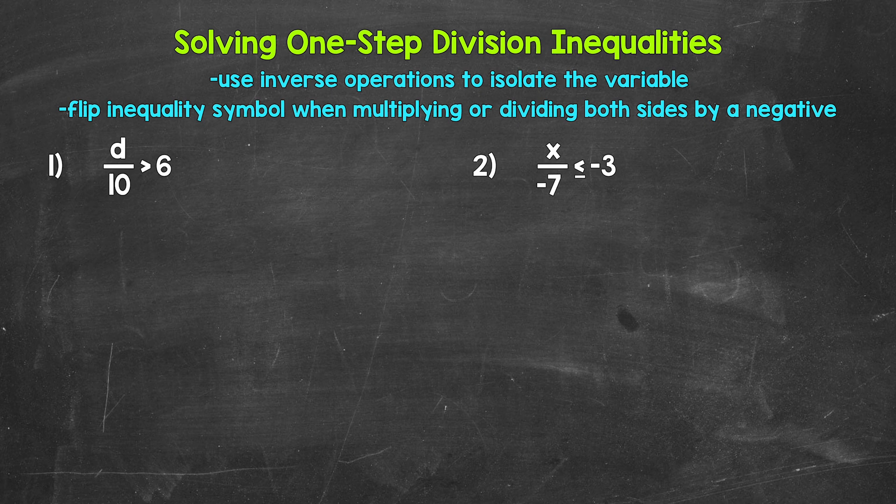When we solve inequalities, we want to isolate the variable, get it by itself on one side of the inequality. We do that by using inverse operations. This is very similar to when we solve equations. One thing we need to be aware of, when it comes to inequalities, we flip the inequality symbol when multiplying or dividing both sides by a negative. We will talk more about this later in the video.